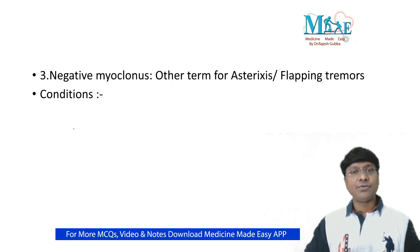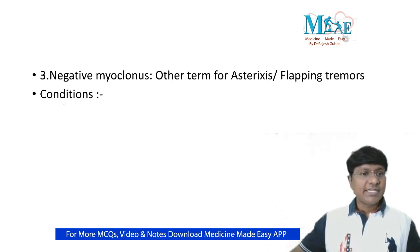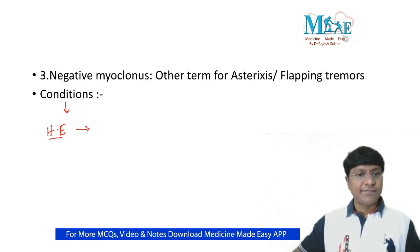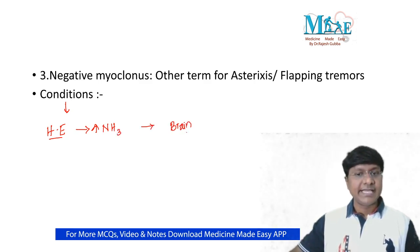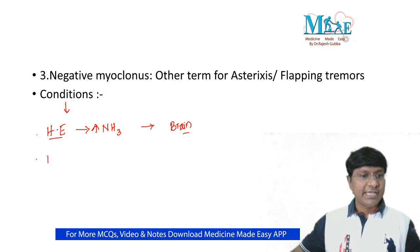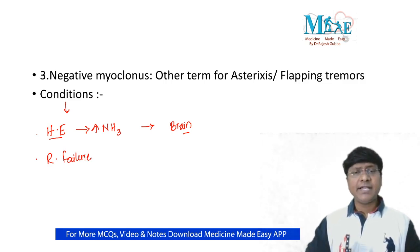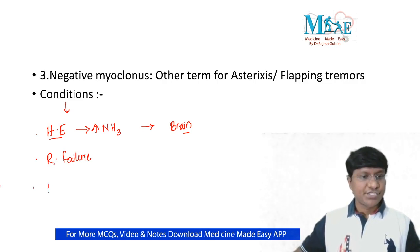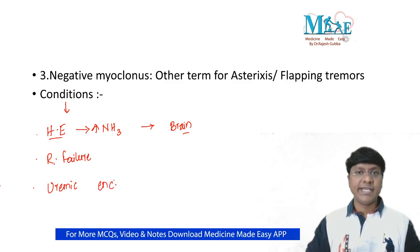Now for negative myoclonus — the other terms are asterixis or flapping tremors. You will have this in patients with hepatic encephalopathy, where there is an increase in ammonia levels. This ammonia gets deposited within the brain, particularly within the basal ganglia. The other condition is type 2 respiratory failure where there is increased carbon dioxide, and also uremic encephalopathy.